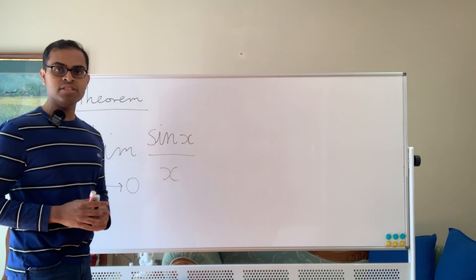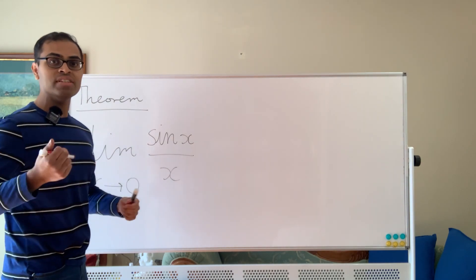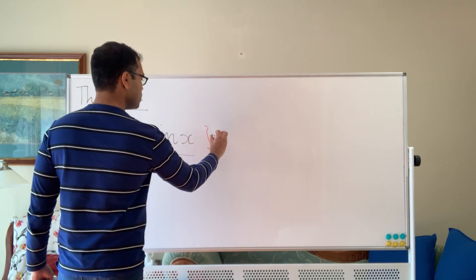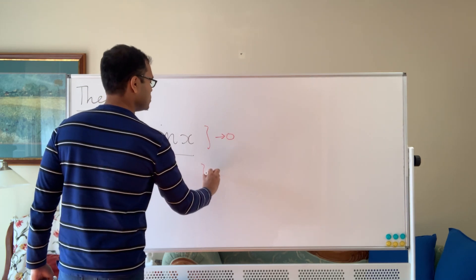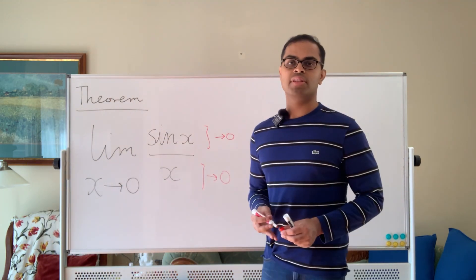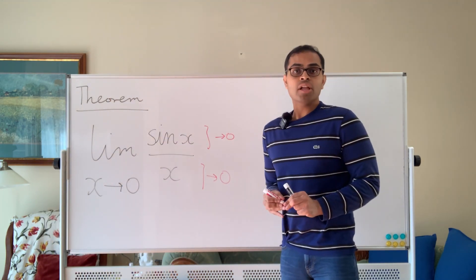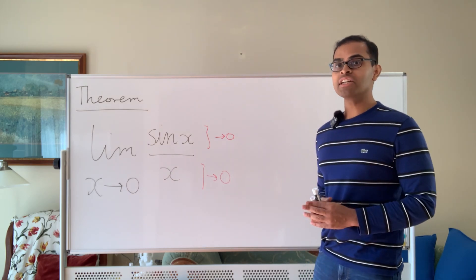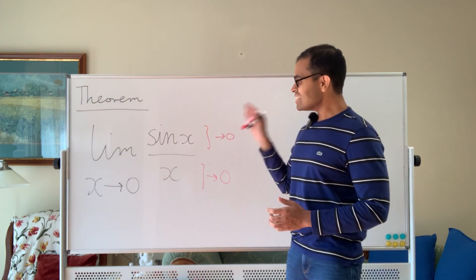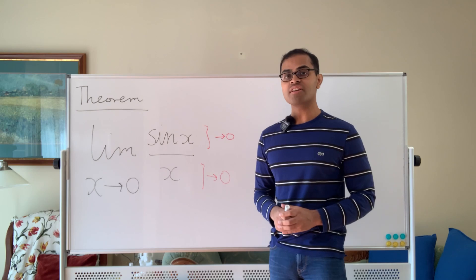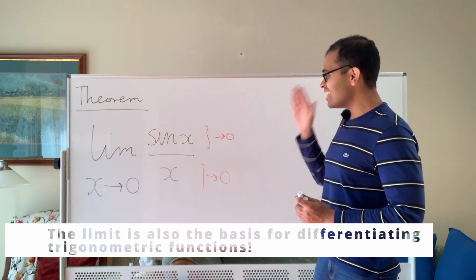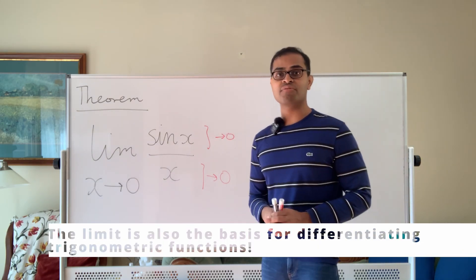So limit x goes to 0 of sine x over x is a 0 over 0 indeterminate form, because as x approaches 0, sine x approaches 0 and x approaches 0. If you know L'Hopital's rule, that's going to actually be circular reasoning. You can't just differentiate top and bottom, because this is actually the limit definition of the derivative of sine x at 0. So L'Hopital's rule is circular. We have to go straight into the definition of sine.